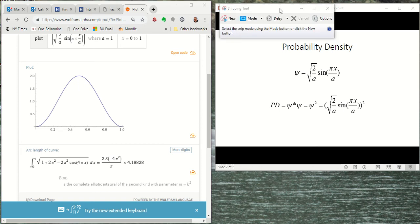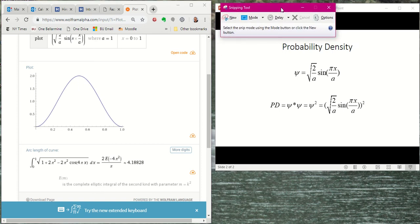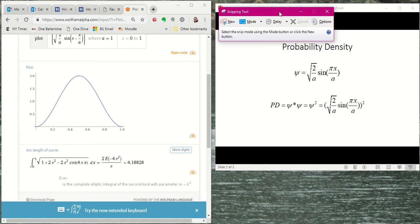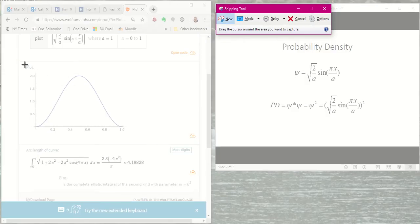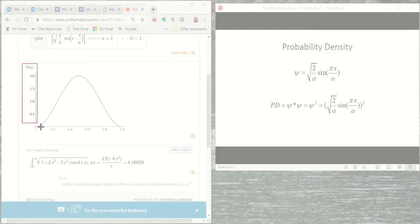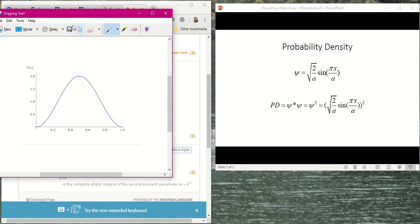So I have opened up the snipping tool from Windows 10, which allows me to actually copy particular segments of a window. And so what I'm going to do is do a rectangular snip here. And I'm going to select New. And then I'm just going to simply select the area that I'm going to snip. And there it is.